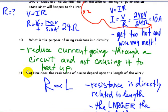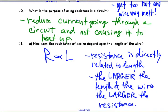So the purpose of resistors in the circuit is to reduce the current going through a circuit and not cause it to heat up. So it can almost be thought of as a safety precaution.